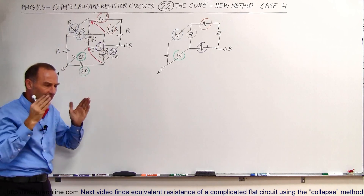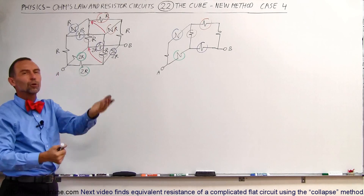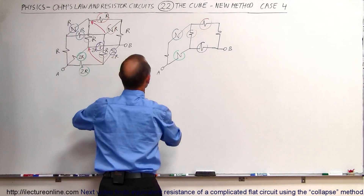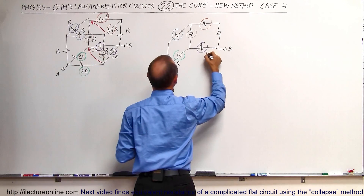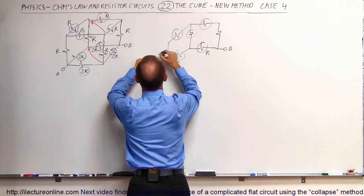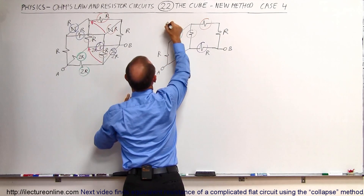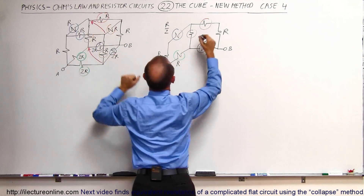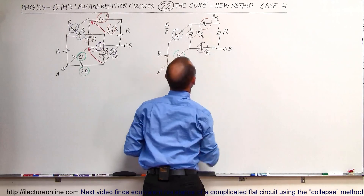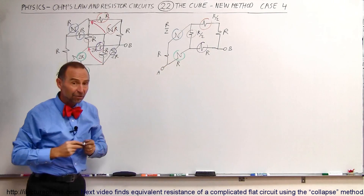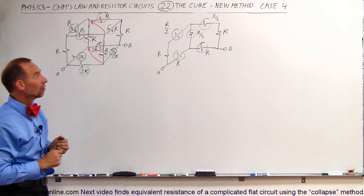With two parallel branches carrying the same amount of current, putting them together carries double the current, therefore half the equivalent resistance. So these two together form a single 1R resistor, those two combined form a single 1R resistor. The others have now changed: those two become an R/2 resistor, these two an R/2 resistor, and those two front and back an R/2 resistor. Now we have an equivalent circuit that is flat and much easier to solve.